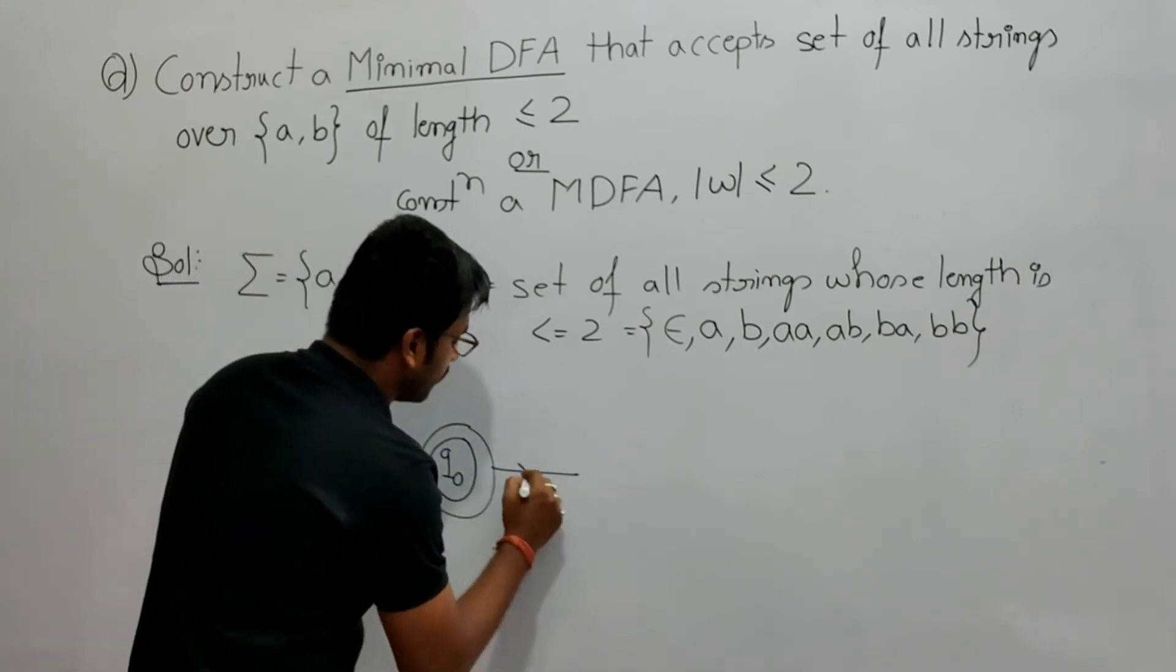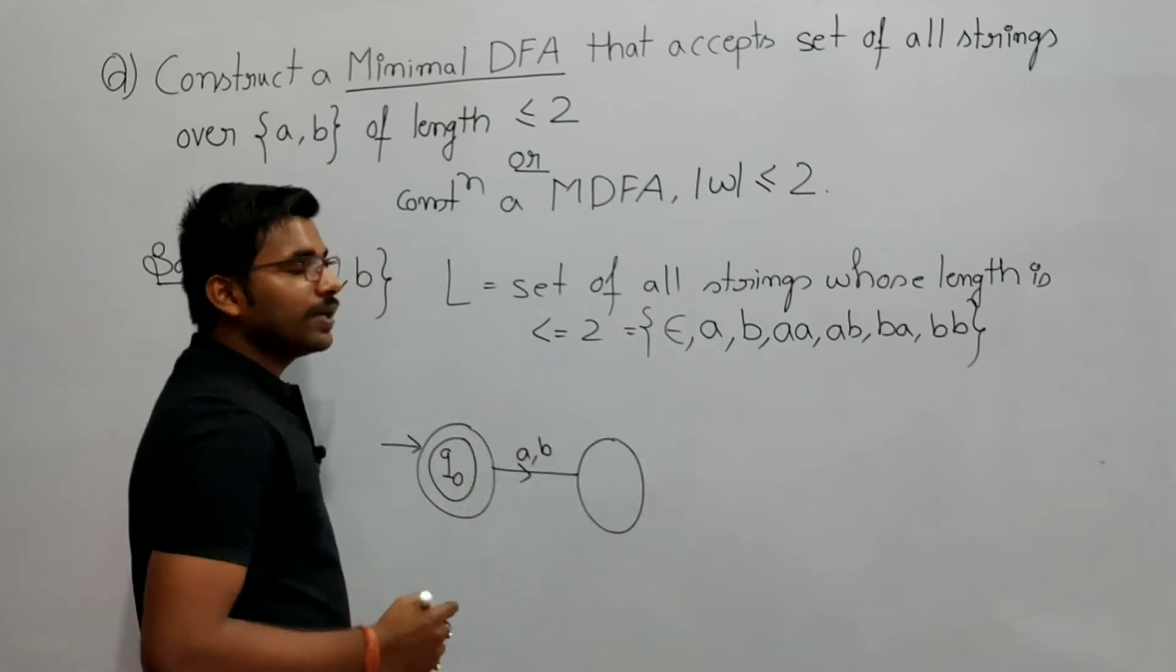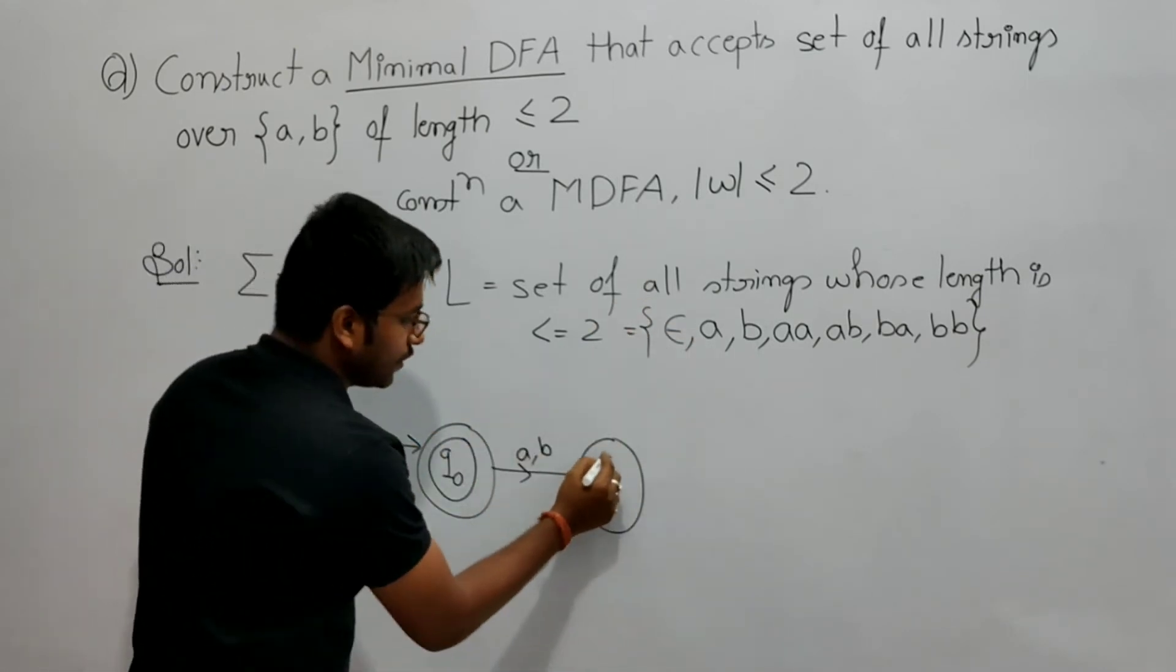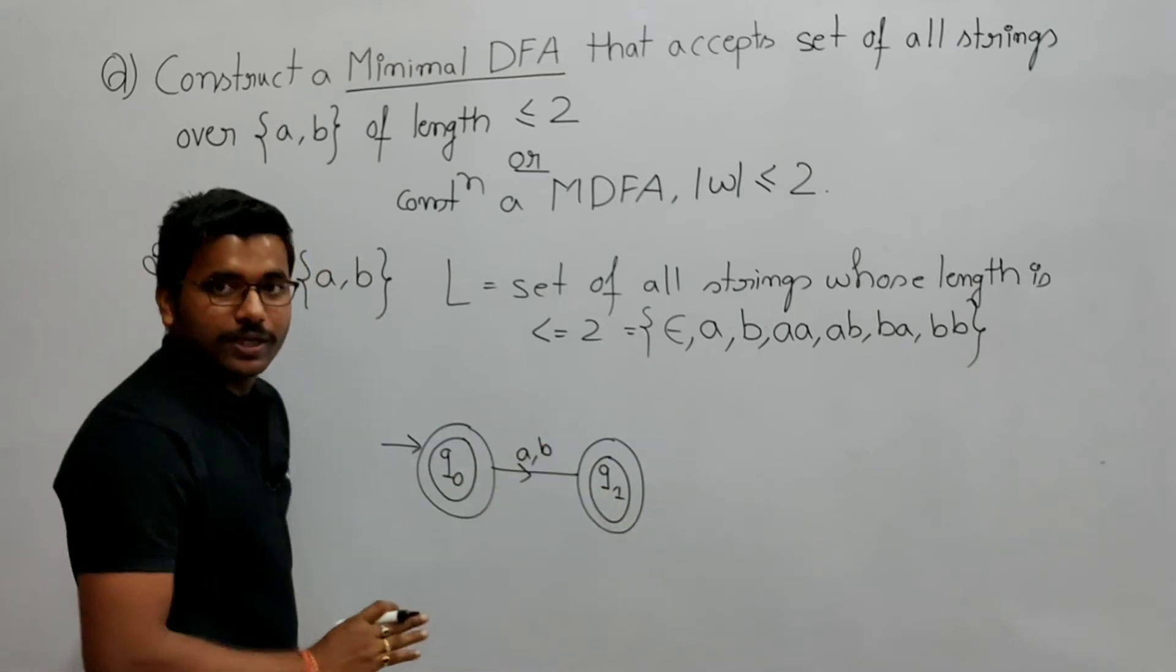Now by getting a or b, the length becomes 1. So even length 1 strings belong to this language. So see, q0 by getting either a or b, it will reach...